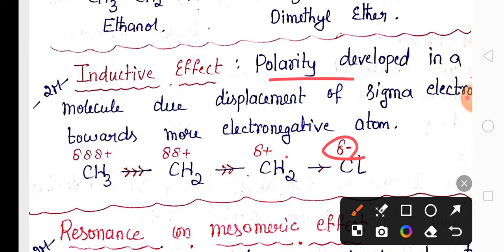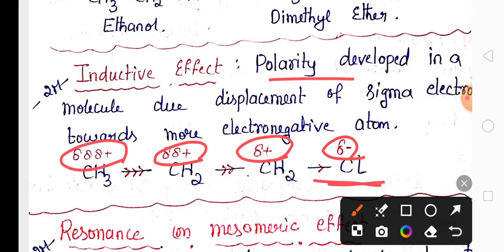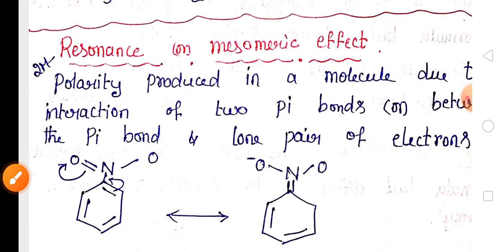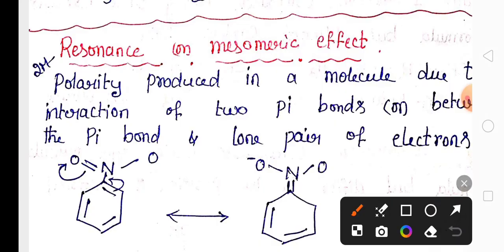The inductive effect definition is very important. Polarity develops in the molecule due to the displacement of sigma electrons towards an electronegative atom. This is very important for two marks. The mesomeric effect is also very important — it is also called the resonance effect.